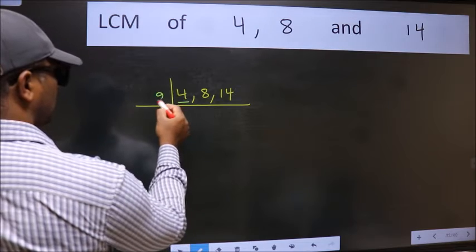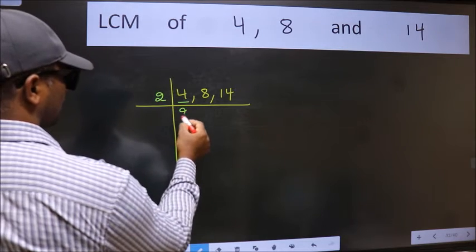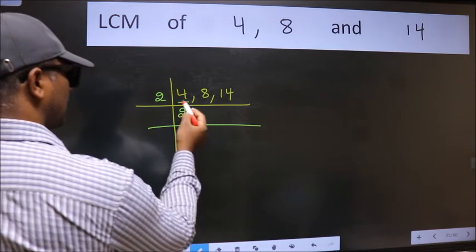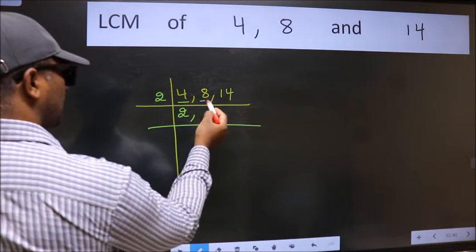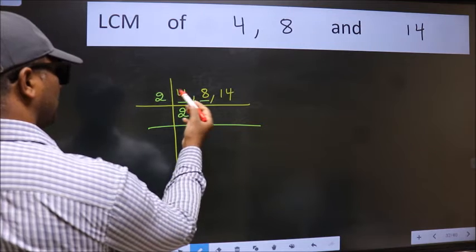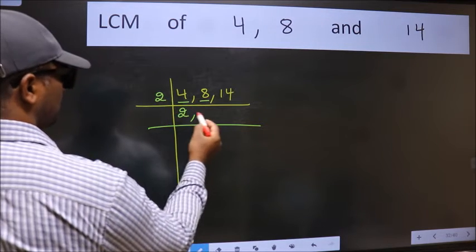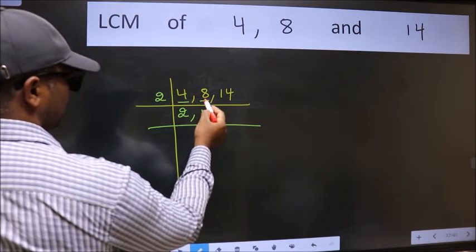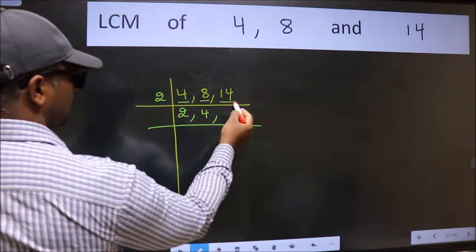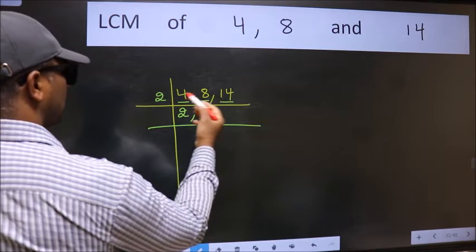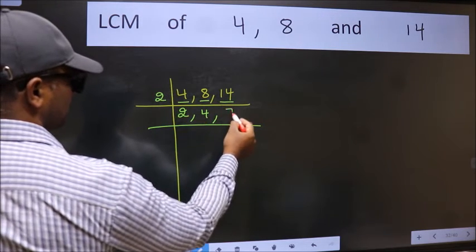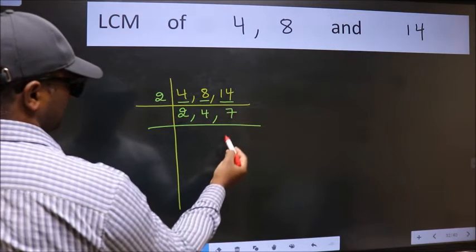4 is 2×2 is 4. The other number 8 — when do we get 8 in the 2 table? 2×4 is 8. The other number 14 — when do we get 14 in the 2 table? 2×7 is 14.